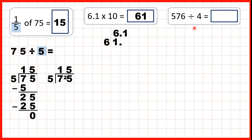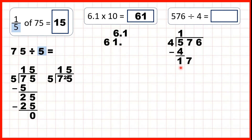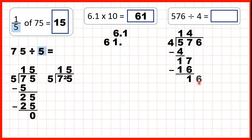576 divided by 4. So, to start, we have 5 divided by 4. Well, 1 times 4 is 4, and because that's 1 times, we write 1 in our answer line. Now, we subtract: 5 minus 4 is 1, and we bring down the 7. So, we have 17 divided by 4. The closest multiple of 4 to 17, which is still less than 17, is 16. And because 16 is 4 times 4, we write 4 in our answer line. Again, we subtract: 17 minus 16 is 1, and we bring down the 6. So, we have 16 divided by 4. That's exactly 4, because 4 times 4 is 16, and then we can subtract to show that we don't have a remainder.